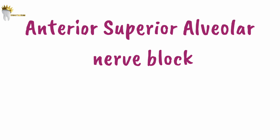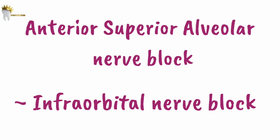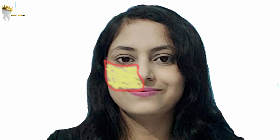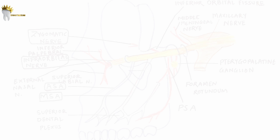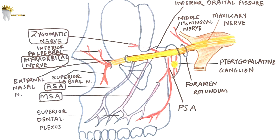If you see the name anterior superior alveolar nerve block, it's the same as infraorbital nerve block. Actually, the infraorbital nerve supplies the soft tissues of the anterior portion of the face and not any of the teeth. So it's inaccurate to call it the infraorbital nerve block when our goal is to provide anesthesia to the teeth. This nerve block doesn't just anesthetize the infraorbital nerve.